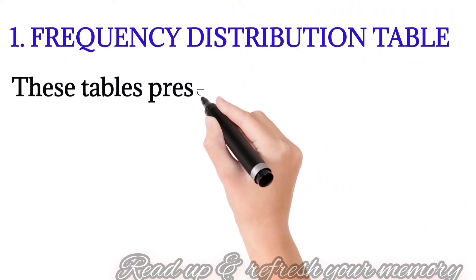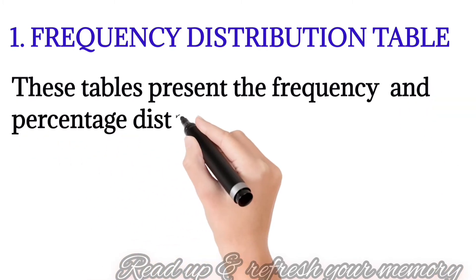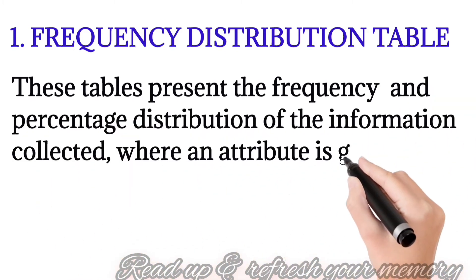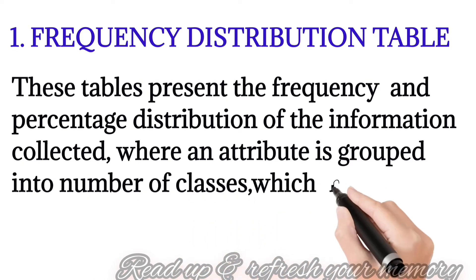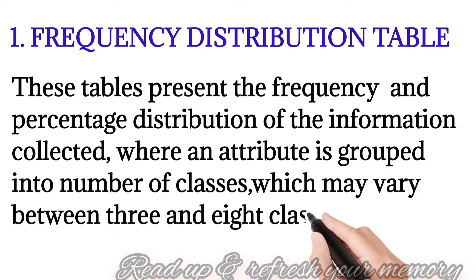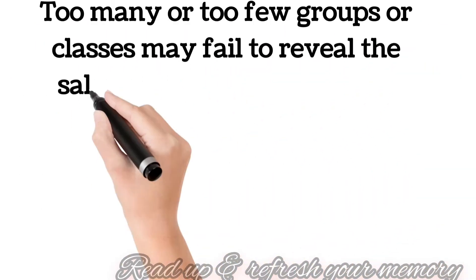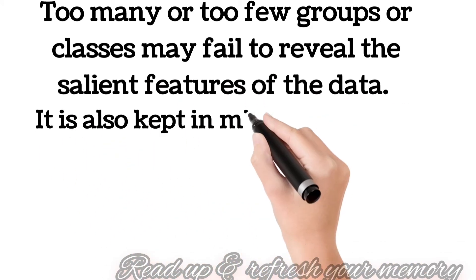First one: frequency distribution table. This table presents the frequency and percentage distribution of the information collected. This frequency distribution table helps to present the frequency and the percentage distribution of the information.